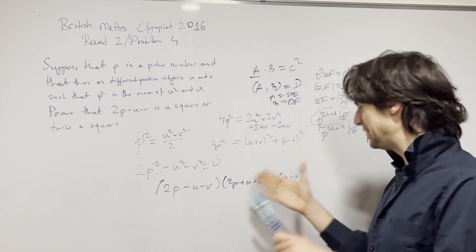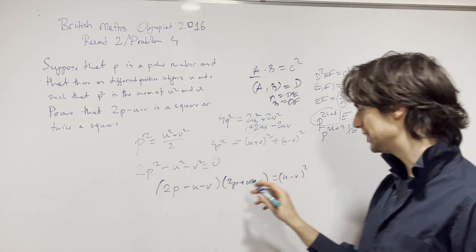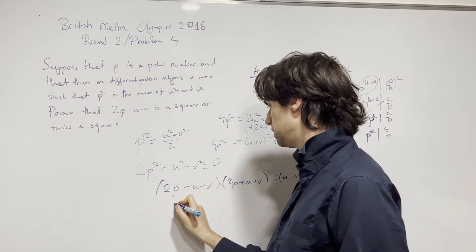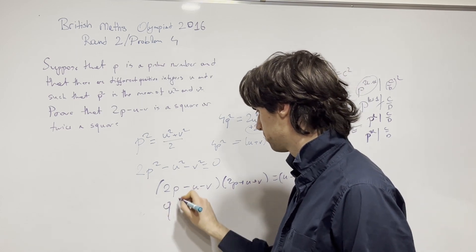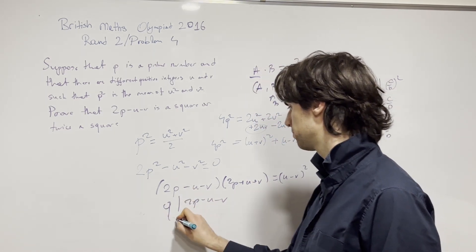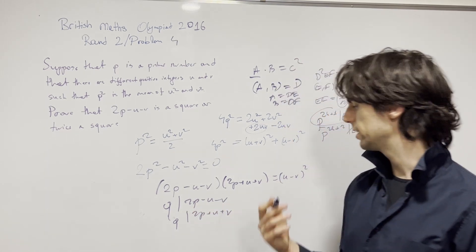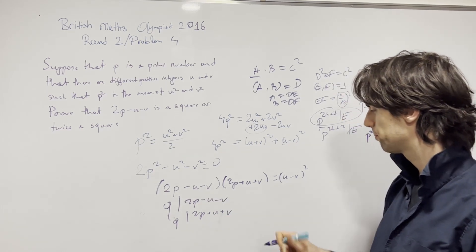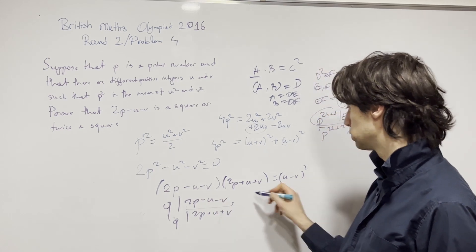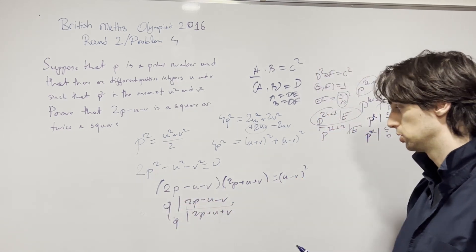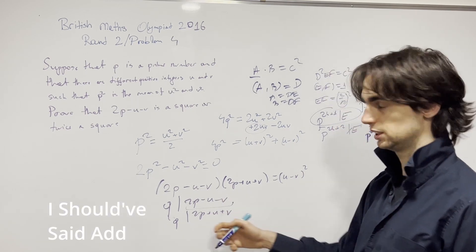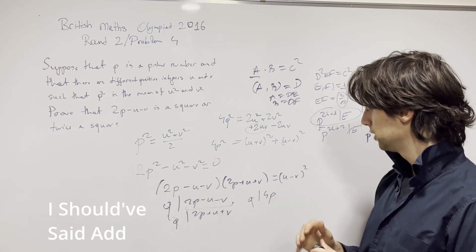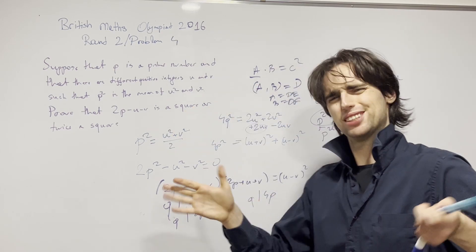I haven't fully tried this problem yet, but I'm fairly confident that's the right approach. Let a = 2p − u − v and b = 2p + u + v; their product is a square. Let's look at their GCD. If a prime q divides both 2p − u − v and 2p + u + v, then by subtracting, q also divides 2(u − v), and by adding, q divides 4p.